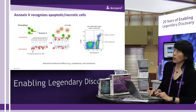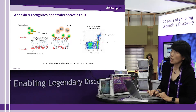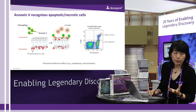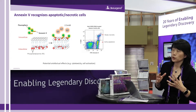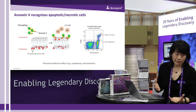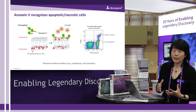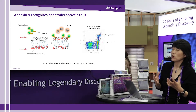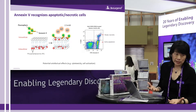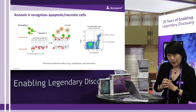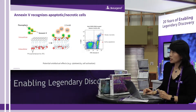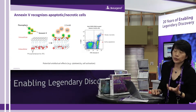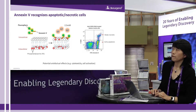Annexin V has been used as a gold standard for a long time, but there is a disadvantage: when it binds, you have to use Annexin V binding buffer containing 2.5 mM calcium. Calcium is required for many cell activities, so incubating cells in this buffer may generate potential artifacts — for example, cell activation, cell aggregation, and non-specific binding.